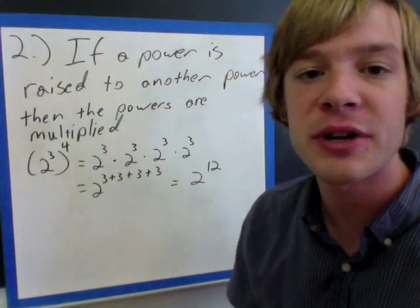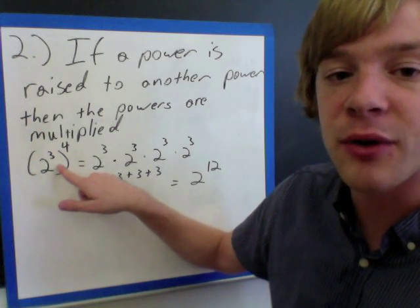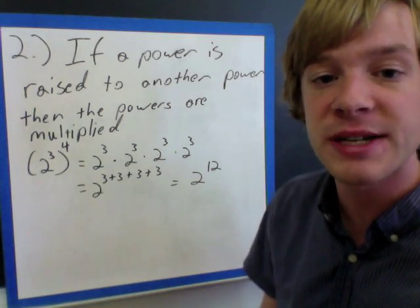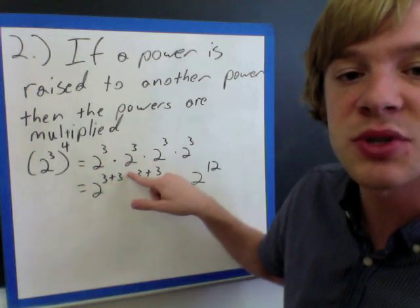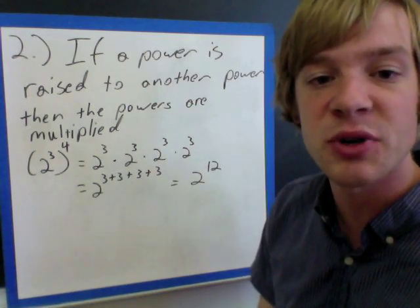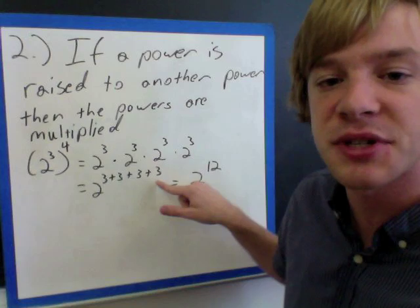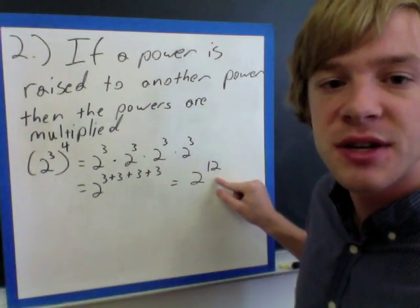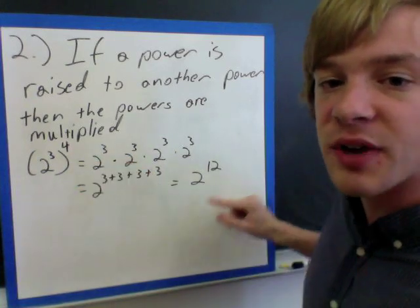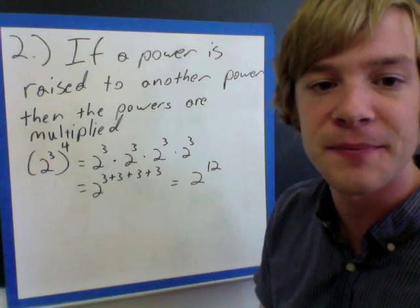My second rule is that if a power is raised to another power, then the powers are multiplied. For instance, I have 2 to the 3rd power raised to the 4th power. That's the same thing as 2 to the 3rd times 2 to the 3rd times 2 to the 3rd times 2 to the 3rd. If you remember your properties of multiplying exponents with the same base, we just add our powers together: 3 plus 3 plus 3 plus 3, which gives us 2 to the 12th. And if you notice, if I multiplied the original 3rd power times the 4th power outside the parentheses, I would have gotten 2 to the 12th.